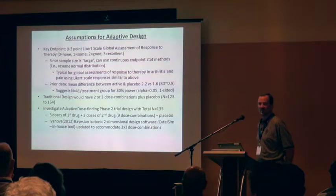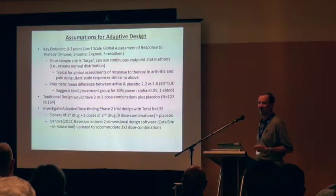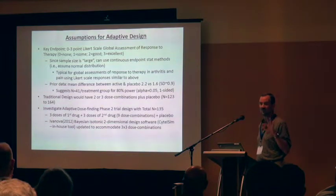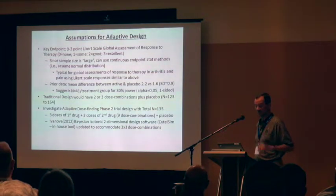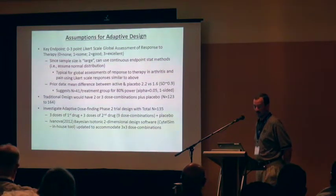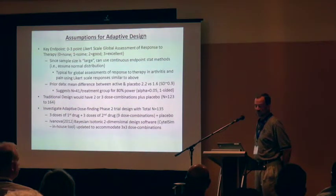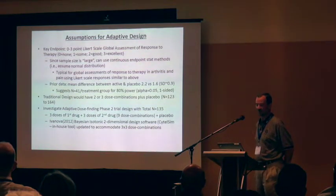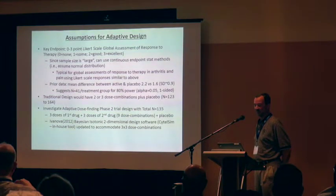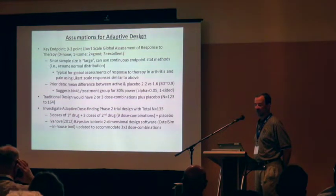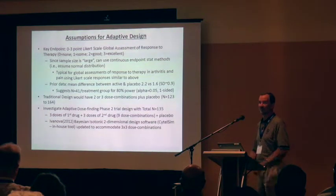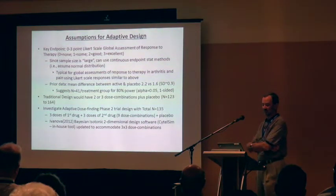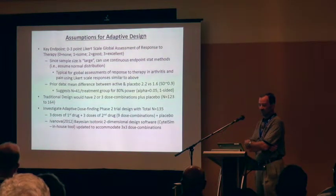We used that sample size to develop an adaptive design including nine combinations — three of each treatment — plus placebo. We used a Bayesian isotonic design developed by Anastasia Ivanova, from her 2012 paper, which identifies a Bayesian isotonic design in one dimension that we generalized into two dimensions using her two-dimensional approach with an in-house software tool.